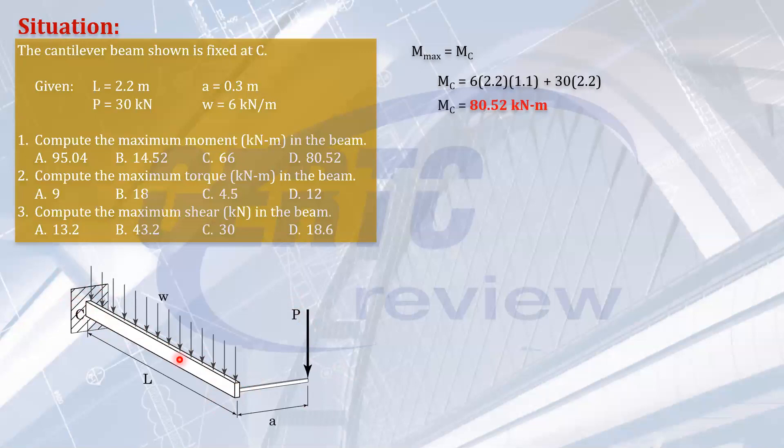Only P because it is acting off axis, and that will be—by the way, all throughout the length the torque is the same, the twisting moment is the same. That will be P times a: 30 times 0.3, and that is 9 kilonewton-meter of torque, or we call it the twisting moment. It will twist the beam.